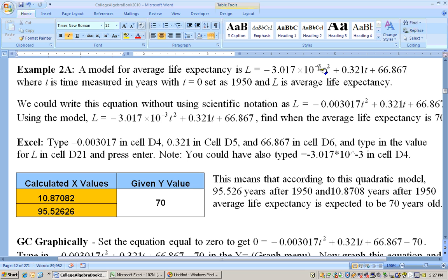So times 10 to the negative third means move your decimal point three places to the left. So here's one, and then I'll need to move it two more places to the left, which gives me 0.003017T squared. This is just an exponent on a number. That doesn't affect it. It moves the decimal point, but it's still a quadratic equation because it's the variable that matters.